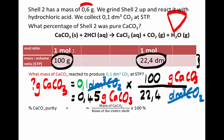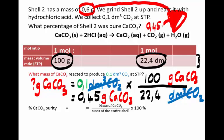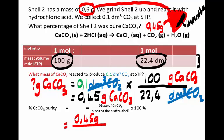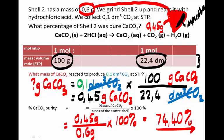This means the shell, which has a total mass of 0.6 grams, consists of 0.45 grams of calcium carbonate and the rest is impurities. The percent purity is the mass of calcium carbonate inside the shell divided by the mass of the whole shell, converted to a percentage. Using the full calculator value (0.446428571) divided by 0.6, multiplied by 100%, gives 74.4%. So 74.4% of the shell is calcium carbonate, and the remaining 25.6% is impurities.